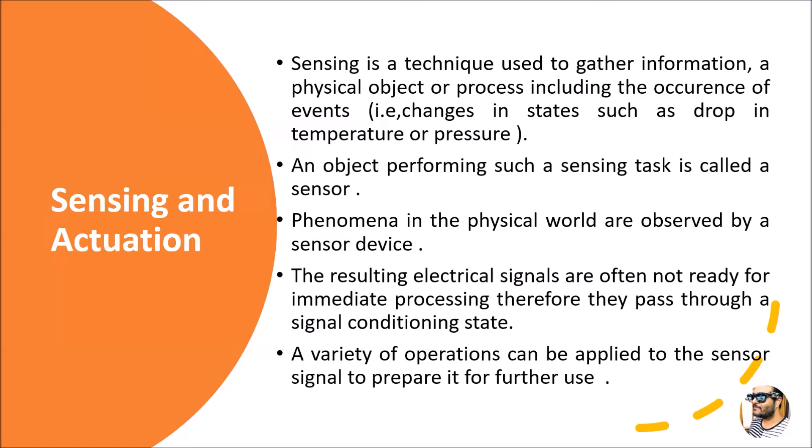Whatever phenomena or changes take place in the physical world can be observed by the sensor device, resulting in electrical signals. Whatever physical values or parameters the sensor captures — environmental or industrial — they are converted into electrical signals, which are the output from the sensor. These signals can be in analog mode or digital mode.